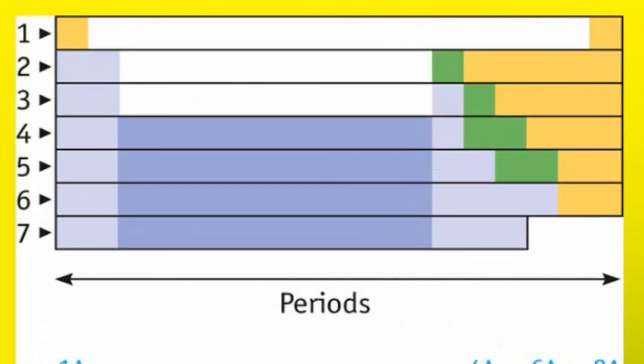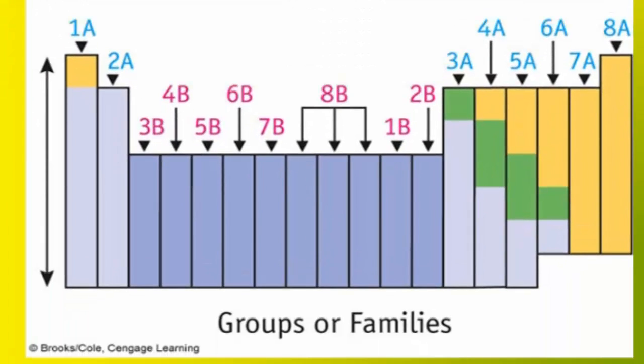The rows in the periodic table are called periods, and there are seven periods. The columns are called groups. The word family is hardly ever used, so do not be concerned about using the word family.